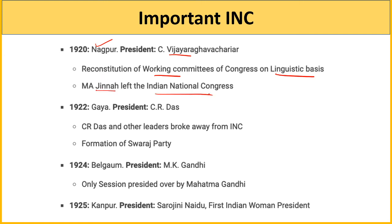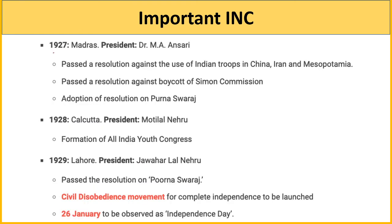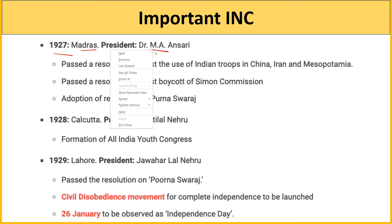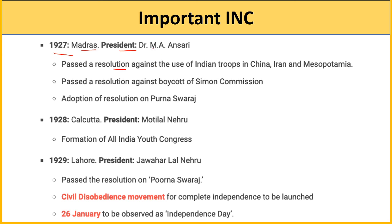1920 Nagpur - president C. Vijayaraghavacharya; Non-Cooperation Movement accept kiya gaya; suggestion of Mahatma Gandhi par Congress Working Committees ko linguistic basis par reconstitute kiya gaya; Mohammad Ali Jinnah ne Indian National Congress ka saath chhod diya. 1922 Gaya - president C.R. Das; C.R. Das aur Motilal Nehru ne INC se alag hokar Swaraj Party banayi. 1924 Belgaon - president M.K. Gandhi; yeh ikauta session hai jo Mahatma Gandhi ne preside kiya. 1925 Kanpur - president Sarojini Naidu; pehli Hindustani mahila president bani. 1927 Madras - president Dr. M.A. Ansari; resolution pass hua ki Indian forces ko China, Iran, Mesopotamia ke against use nahi karenge; Simon Commission ka boycott; Poorna Swaraj resolution ki discussion adopt ki gayi.